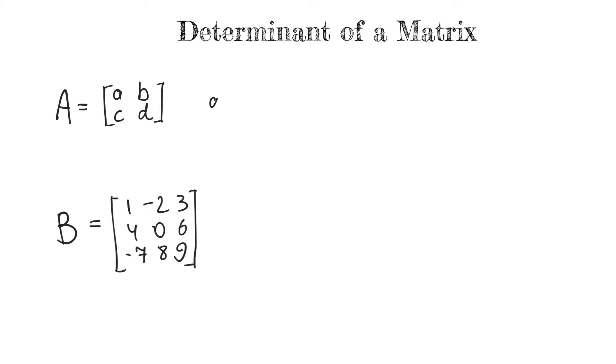So, the determinant of A, it can be written like this, det A, or also like this, equals to, lo and behold, it's ad minus bc. There you have it, that's the determinant.